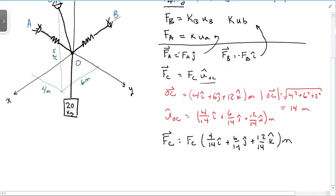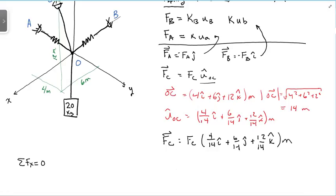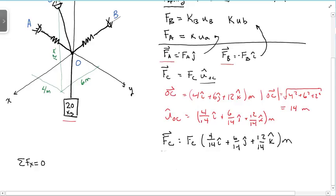So now I can apply my equations of equilibrium. I have sum of the forces in the x direction have to equal 0. And I take the components of each of these, of FA, FB, the weight, and FC. Take the x component of each one of those, set that equal to 0. So let's go ahead and do that.